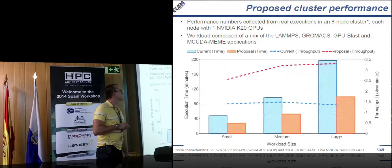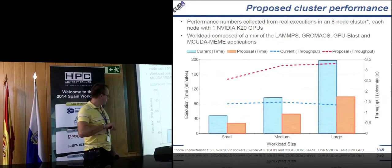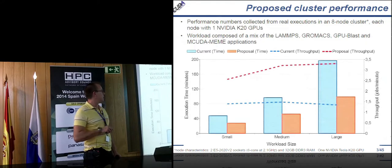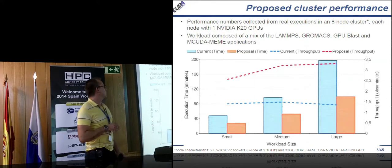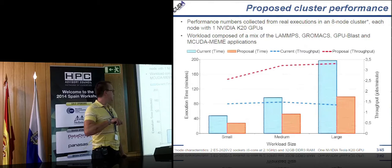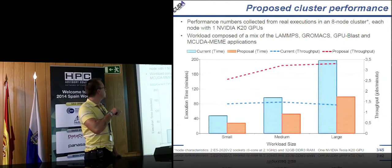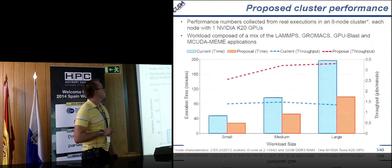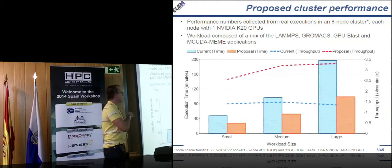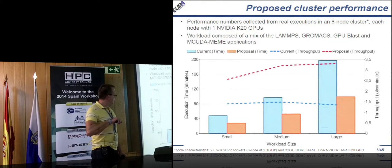Each of the nodes in this cluster has one GPU. The node has two sockets with Ivy Bridge, and each node has an NVIDIA Tesla K20. We have three different workloads: small size, medium size, and large size — this is about half an hour to more than an hour. In green is the execution time using traditional CUDA and SLURM.